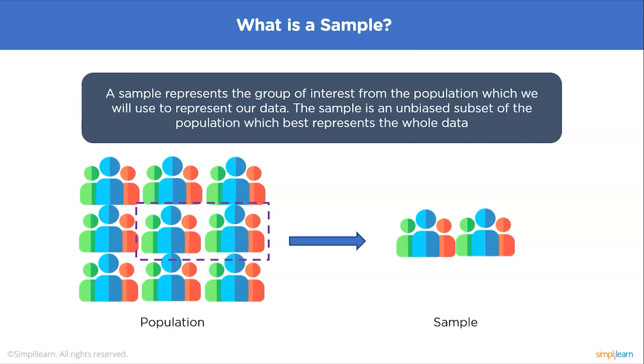The size of the sample is always less than the total size of the population. Typically the population is very large, making a census or a complete enumeration of all values in the population impractical or impossible. The sample represents a subset of manageable size. Samples are collected and statistics are calculated from the sample so that one can make inferences or extrapolations from the sample to the population. This process of collecting information from a sample is referred to as sampling.